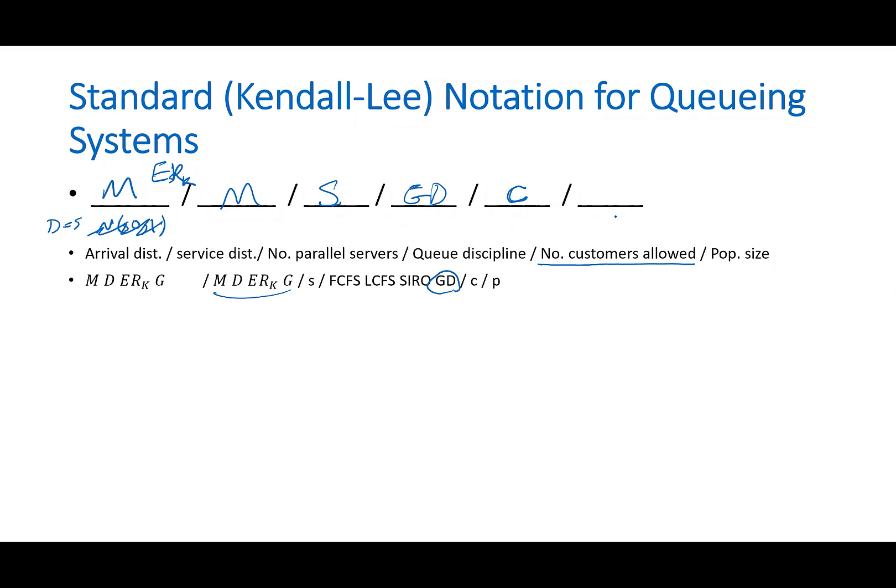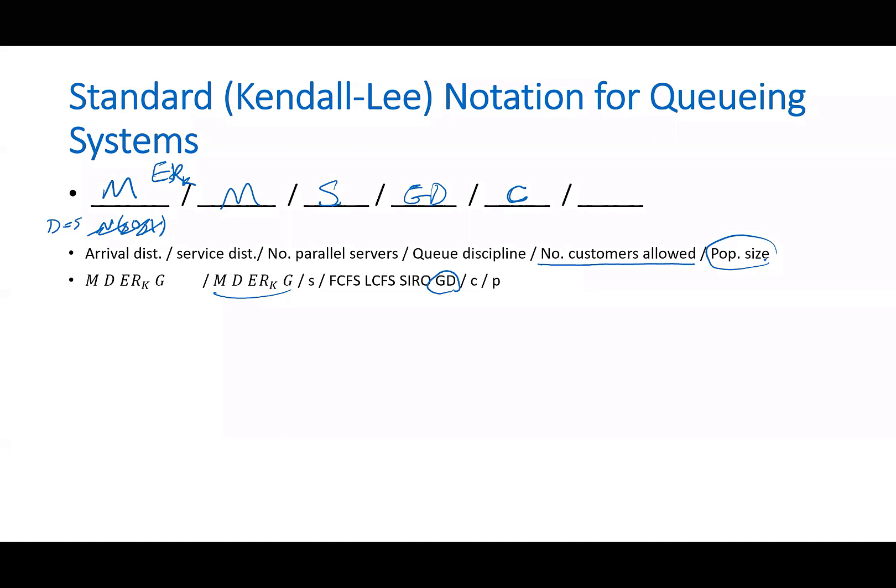And then this last one is the population that enter the system, population size. For example, if you're talking about Walmart, the population size is practically infinite, which means anyone in the world can go to this specific Walmart store. So there's no cap on it. I just put infinite there. But if I put, for example, 100, I'm talking about maintenance of airplanes for an airline. Because they only have 100 airplanes, the population of arrivals is just 100.